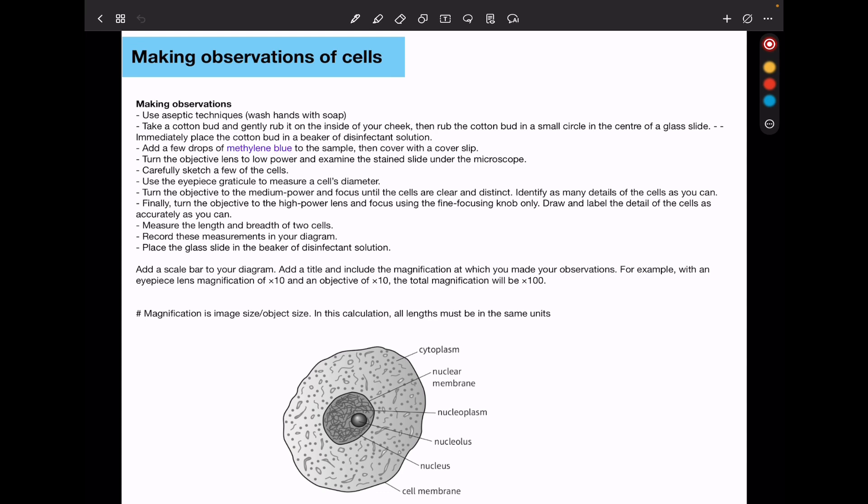So here we have to use the aseptic techniques. We need to wash our hands because sometimes contamination could occur and different cells end up on the microscope slide. In this case, if you're trying to observe your own cells, like cells in your cheeks or cheek cells, you'll get a cotton swab and gently rub it in the inside of your cheek. And then you rub the cotton bud in a small circle in the center of the glass slide. After that, you're going to place the cotton bud in a disinfectant solution because of course, there are microorganisms that could be pathogenic. You will add a few drops of the staining agent, like methylene blue, to the sample and then place the cover slip.